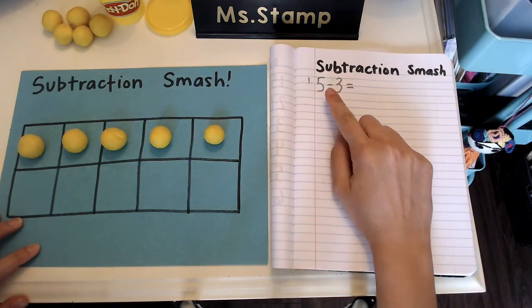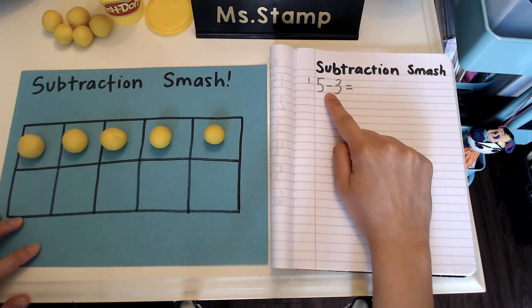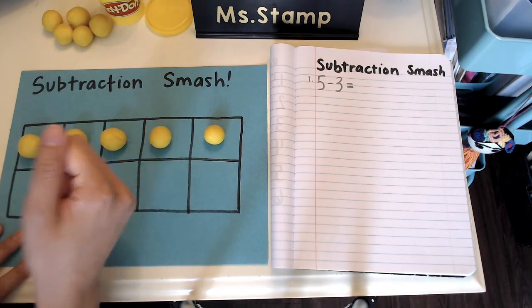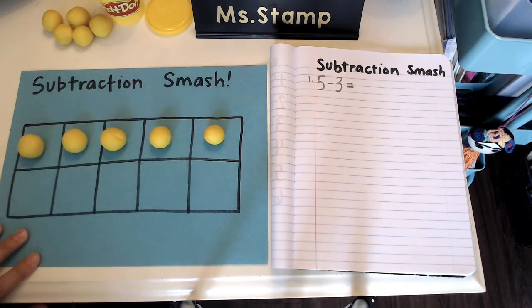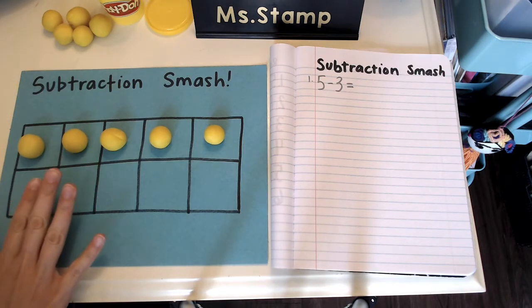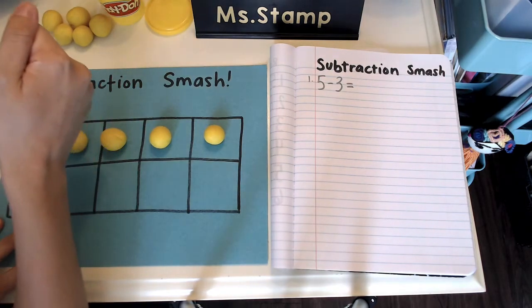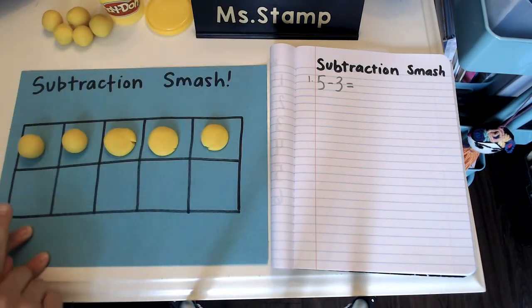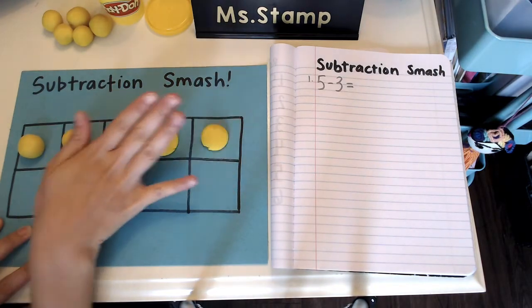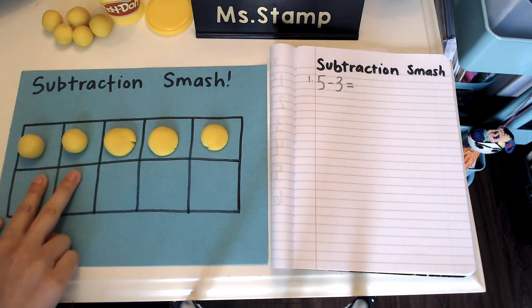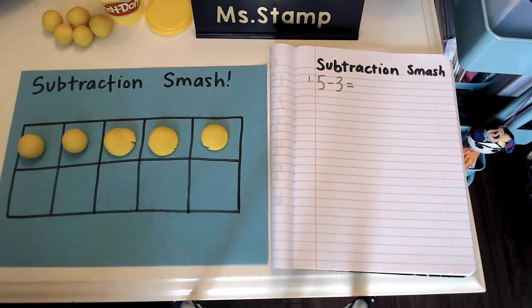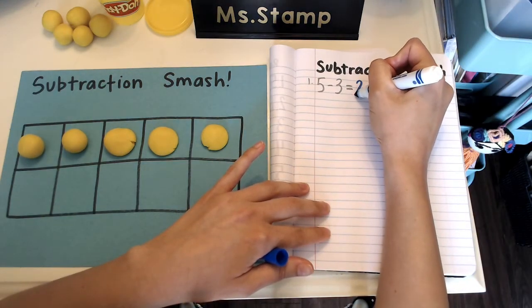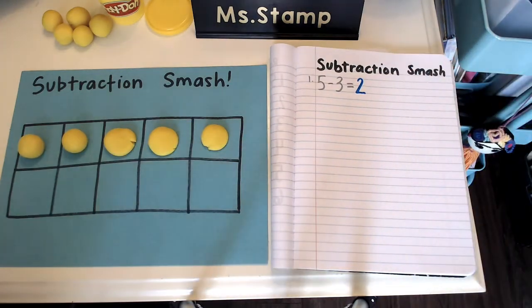All right, so we have five. Now it says minus three, take away three. And here's the fun part, you're going to use your fist to smash three balls of play-doh to see how many you have left that are nice and neat. Let's smash three. Ready? One, two, three. So if I smashed the three, I took those away. How many do we have left? We have two left.